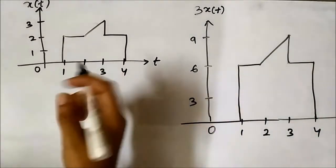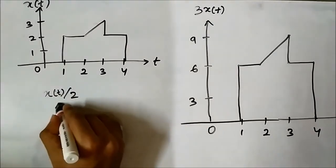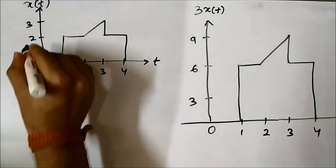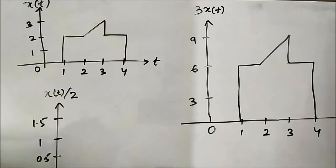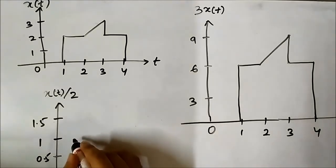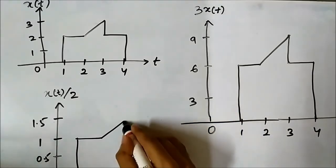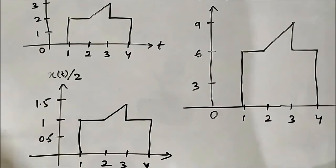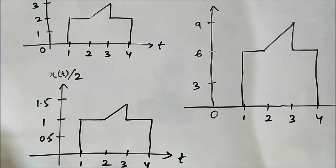For the same signal, if we perform a scaling-down operation, x(t)/2, we identify the amplitude points and multiply by the scaling factor of 1/2. So 1 becomes 0.5, 2 becomes 1, and 3 becomes 1.5. The signal exhibits the same pattern, and the amplitudes are scaled down by a factor of 1/2: 1 became 0.5, 2 became 1, 3 became 1.5 — pattern is the same.